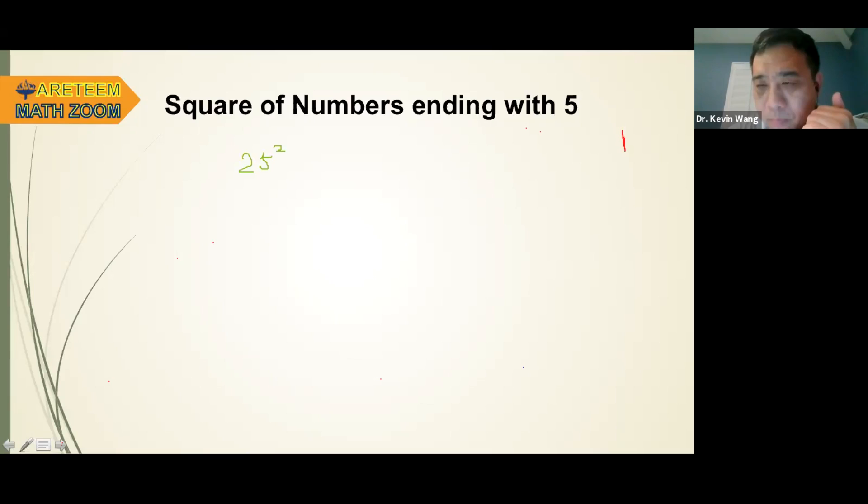A lot of people memorize those numbers. But if we don't memorize, because there are a lot of numbers, we can't memorize too many of these. So you could do the normal way, 25 squared. 25 squared means 25 times 25, right? So you could do the multiplication, just a normal multiplication.